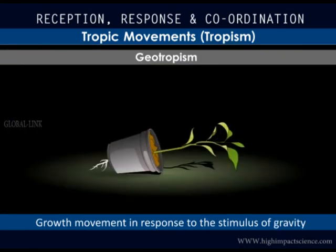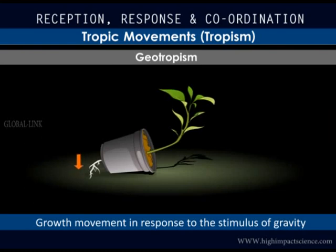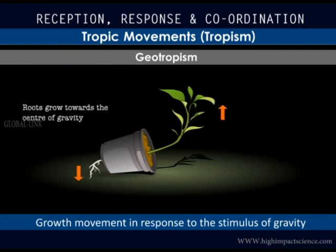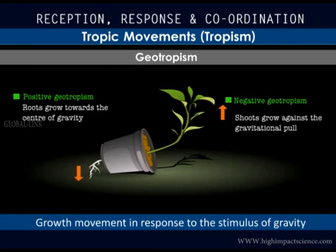The potted plant is then placed horizontally for a few days. It is found that the roots have grown downwards towards the gravitational pull, while the shoots have grown upwards against the gravitational pull. The plant's growth movement in response to the force of gravity is called geotropism. The roots exhibit positive geotropism, which allows them to obtain water and nutrients from the soil, while the shoots exhibit negative geotropism.